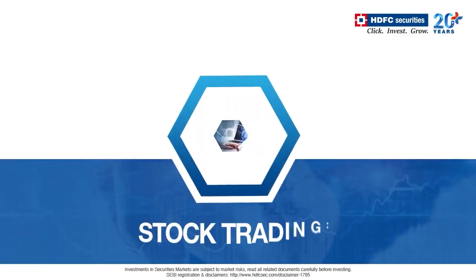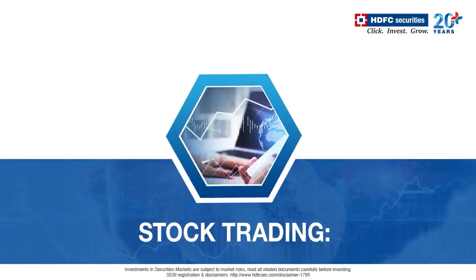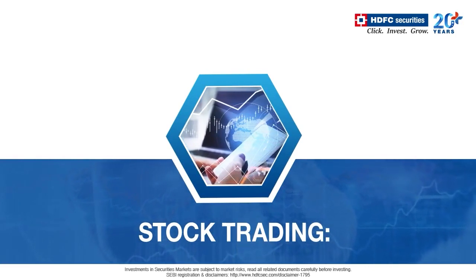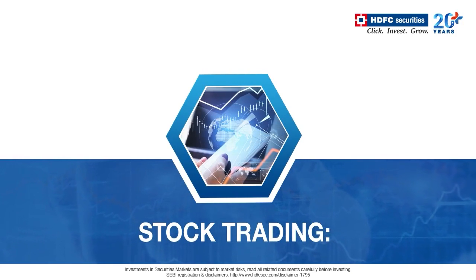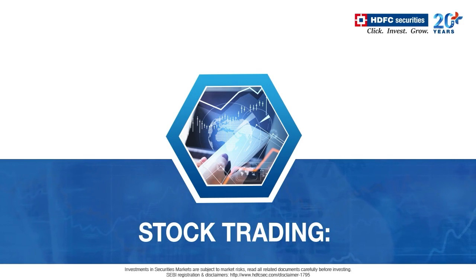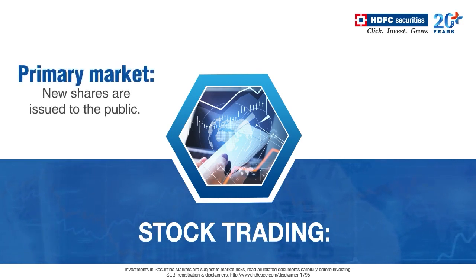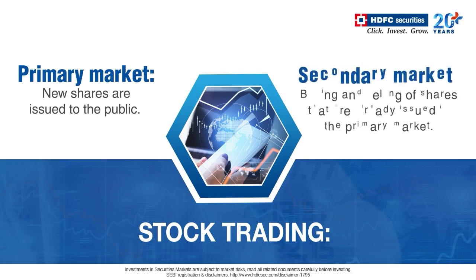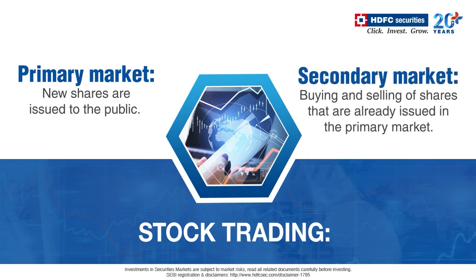Before we discuss how to trade in the share market, let us first understand what is stock trading. Stock trading typically means buying and selling shares in the secondary market. A primary market is where companies issue new stocks and offer them to the public, so the transaction happens between issuers and buyers. A secondary market is where you can buy and sell shares already issued in the primary market, and the transaction takes place between seller and buyer.